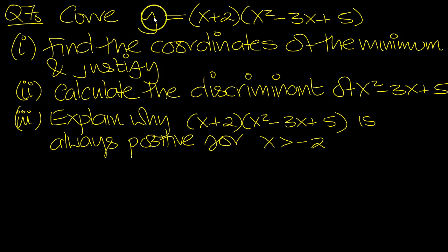Okay, so minimum then. We better expand this bracket. So part 1. Here y is equal to, so it would be x times all of these terms, so it would be x cubed minus 3x squared, plus 5x's.